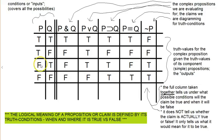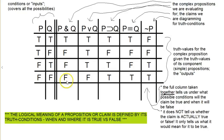We had all these different possible conditions that the world could be in, and this was supposed to cover all the bases. You have all these possibilities for how things could be, and the chart shows you under which of these possibilities a statement is true. In the case of 'and' — the conjunction — it's only true when the two component parts are true. Knowing what it would take for a statement to be true or false defines its logical meaning.